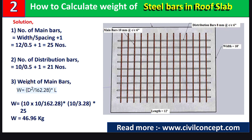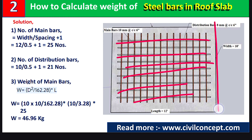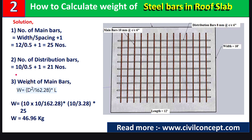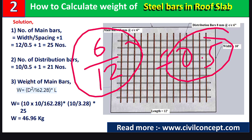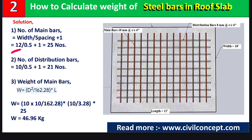In step 2, we calculate the number of distribution bars. Distribution bars are laid in the other direction, so we take the width of 10 feet. Dividing by the spacing: 6 inches divided by 12 equals 0.5 feet. So it is 10 divided by 0.5, plus 1, which gives 21 distribution bars. Note: both values must be in the same unit — here both are in feet.